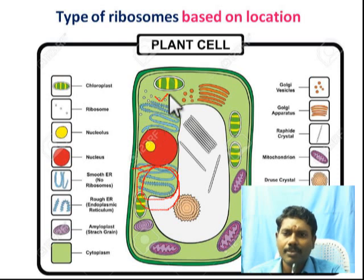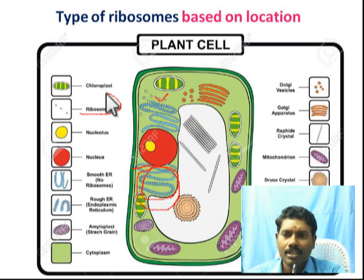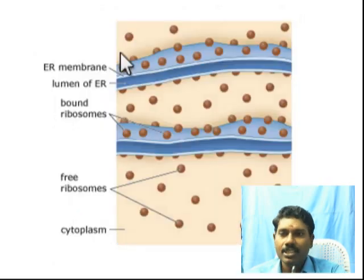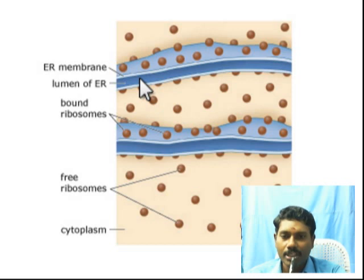The roughness of the rough endoplasmic reticulum is due to the presence of ribosomes. There are free ribosomes present in the cytoplasm as well as bound ribosomes attached to the endoplasmic reticulum.